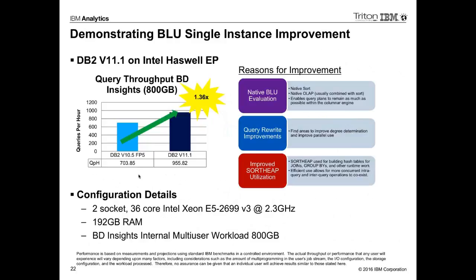This chart gives a quick summary of the performance benefits. Just on a single-instance BLU — an SMP system — you can see about a 36% improvement without doing anything new. Just by being on version 11, keeping the same configuration, you'll see these hidden performance surprises from the new sort algorithm, the SQL push-downs, and all the work we've done. All good news for customers.